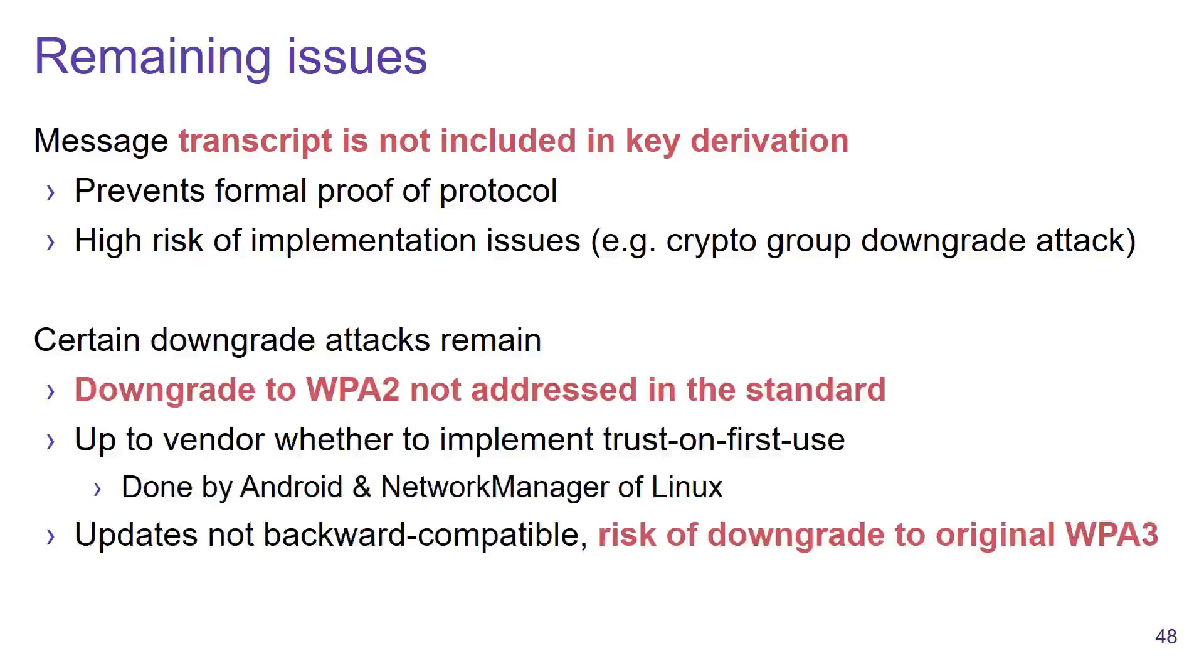Another issue is that certain downgrade attacks are not explicitly addressed. For example, the downgrade attack to WPA2 is not addressed in the IEEE Wi-Fi standard. It is up to vendors whether to implement a defense against this or not. Currently we see that Android and the network manager of Linux implement a trust-on-first-use principle where if they connected to a network using WPA3 once, they will not revert back to WPA2.